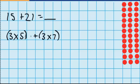So 3 times 5 plus 3 times 7 is the same as 3 times 12. And I know 3 times 12 is 36, so 15 plus 21 must be 36.